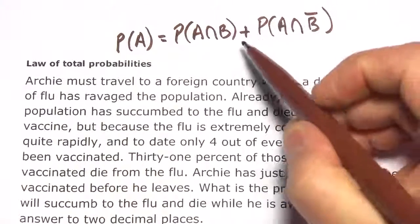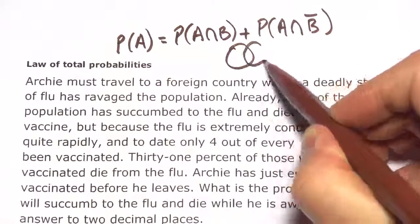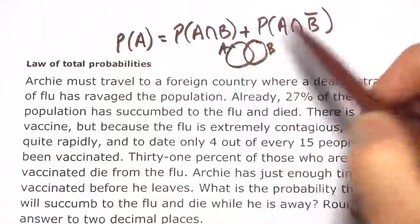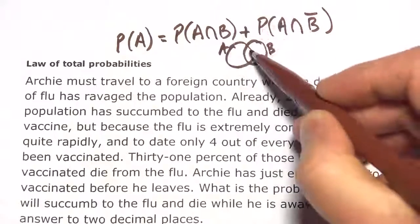The law of total probabilities says that if you have the probability of something, it equals the probability of that thing intersecting with something else plus the probability of that thing intersecting with not something else. A way we can represent this: if this is A and this is B, that first part, A intersecting with B, that's this.